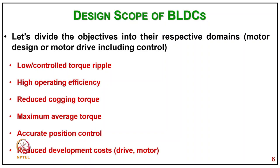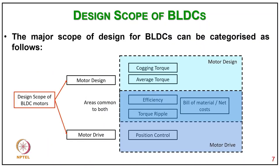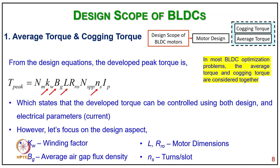Coming to objectives: low and controlled torque ripple, high operating efficiency, reduced cogging torque and maximum average torque, accurate position control, reduced development cost of drive and motor. The major scope of PM brushless DC motors typically covers motor design and motor drive — including cogging and average torque, efficiency improvement, torque reduction, and fill of material net torque — and position control on motor drive.